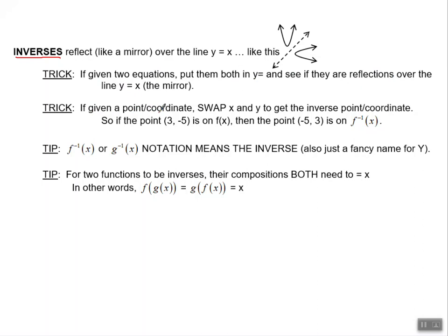Here's another trick. If we're given a point or coordinate, we will swap the x and the y to get the inverse point or coordinate. For example, if we have the point 3, negative 5, and that's on one of our functions, then swap those two values and the point negative 5, 3 will be on its inverse.